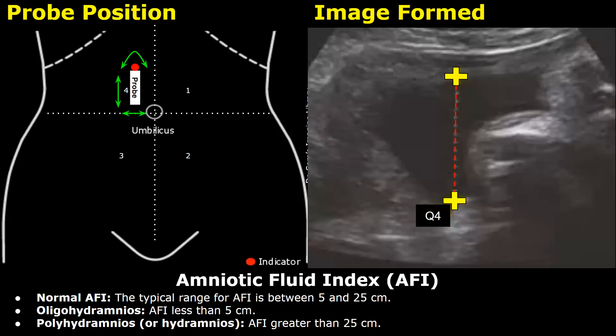You add the four quadrant measurements together and you will get the amniotic fluid index. The normal range of the amniotic fluid index must be between 5 and 25 centimeters.